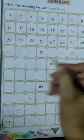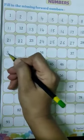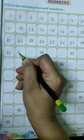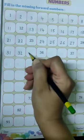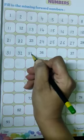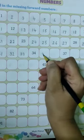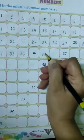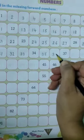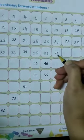Now write 31, then 32, 33. 34 is written here. So write 35, then 36, and after 37,